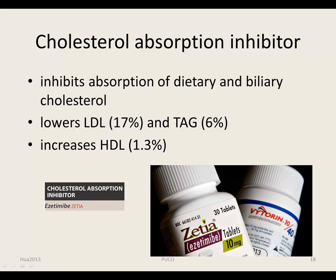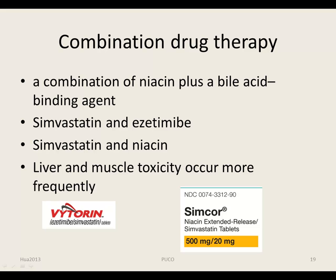Ezetimibe selectively inhibits the absorption of dietary and biliary cholesterol in the small intestine, leading to a decrease in delivery of intestinal cholesterol to the liver. This causes a reduction of hepatic cholesterol stores and an increase in clearance of cholesterol from the blood. It is often necessary to use two anti-hyperlipidemic drugs to achieve treatment goals. For example, type 2 hyperlipidemia patients are commonly treated with a combination of niacin and bile acid binding agents such as cholestyramine. Simvastatin combined with ezetimibe, as well as simvastatin combined with niacin, are currently available in one pill to treat elevated LDL cholesterol.